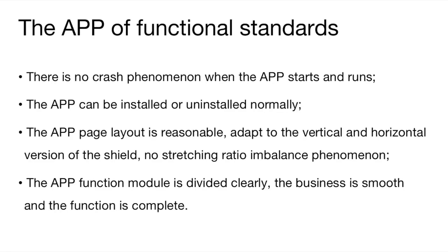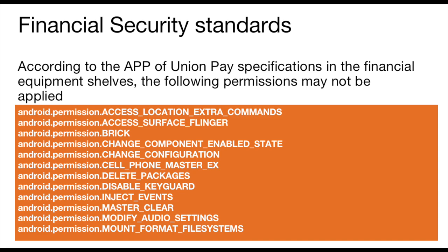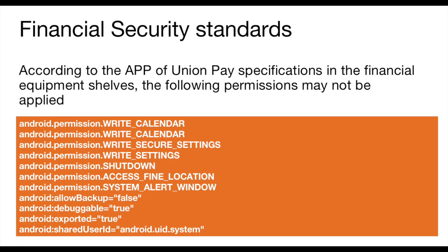Second, the app functional standards: there is no crash phenomenon when the app starts and runs. The app can be installed or uninstalled normally. The app page layout is reasonable, adapts to vertical and horizontal orientation, with no stretching ratio imbalance. The app function modules are clearly divided, the business is smooth, and the function is complete. Third, the app safety standards: the app permissions must match its actual function. The app cannot consume excessive network traffic, must not have virus code characteristics, and must not have root code characteristics. Pop-up window advertisements must not frequently interrupt user operations. Fourth, financial security standards: according to union pay specifications and financial equipment requirements, certain permissions may not be applied.